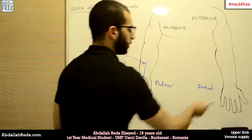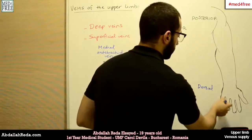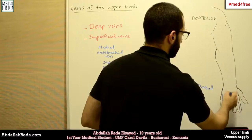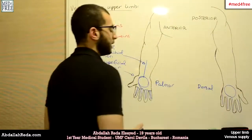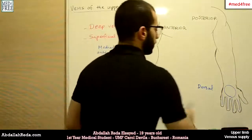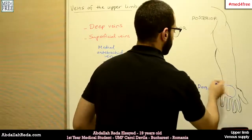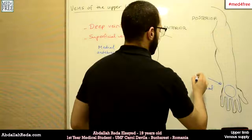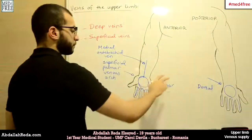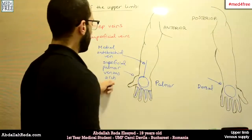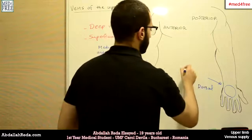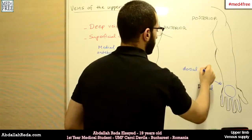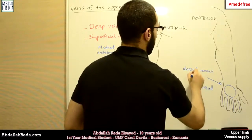On the dorsal side of the hand, we see something similar. The veins also ascend, and at the level of the dorsal side of the hand they form a corresponding arch called the dorsal venous arch.